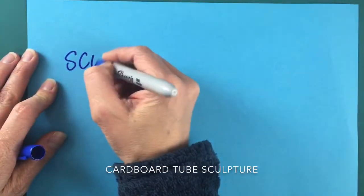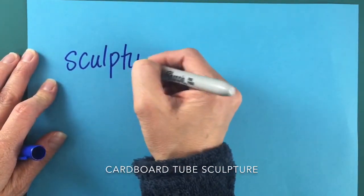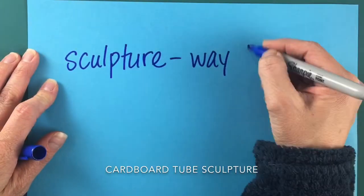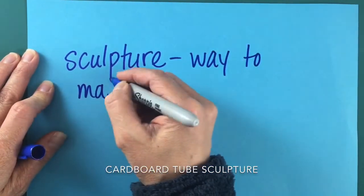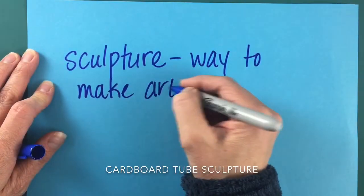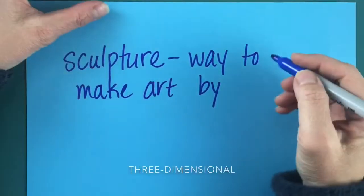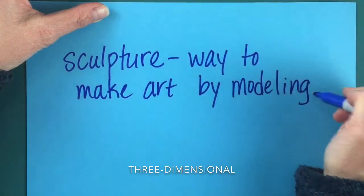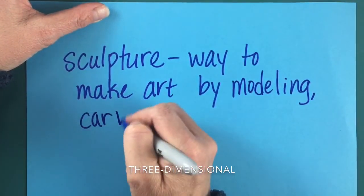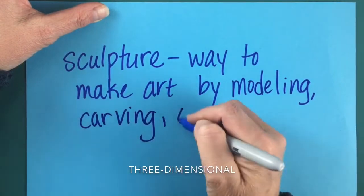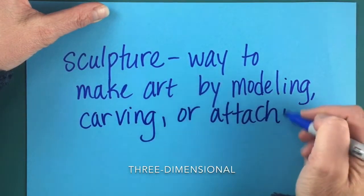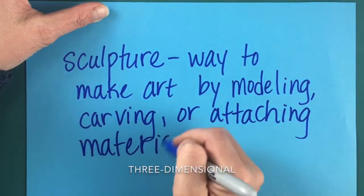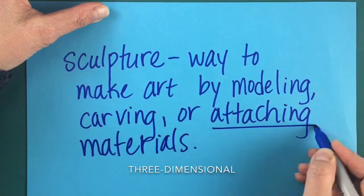So what is a sculpture? A sculpture is a way to make art by modeling, carving, or attaching materials. Today we're going to be attaching.